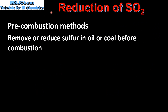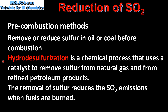We will start by looking at the reduction of sulfur dioxide. Pre-combustion methods remove or reduce sulfur in oil or coal before combustion. The first process we look at is hydrodesulfurization — a chemical process that uses a catalyst to remove sulfur from natural gas and from refined petroleum products. The removal of sulfur reduces the sulfur dioxide emissions when fuels are burned.